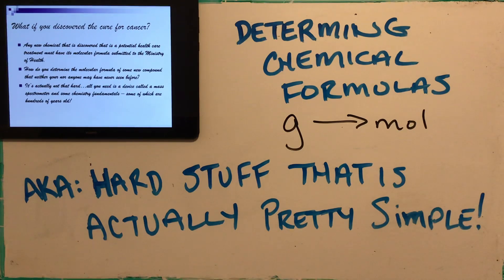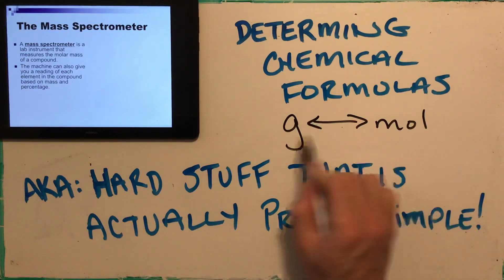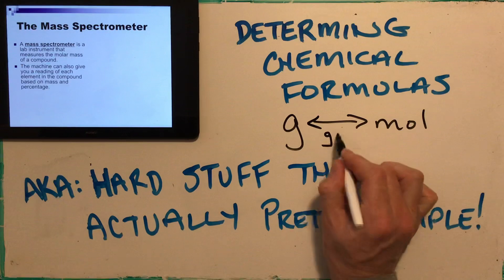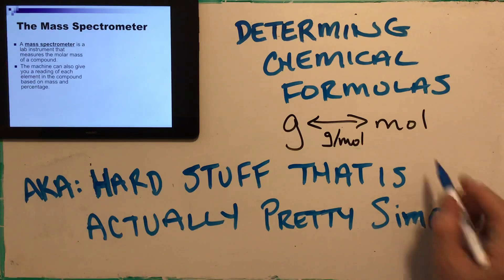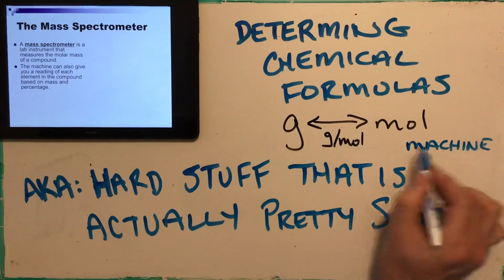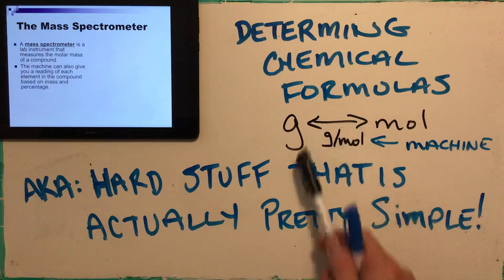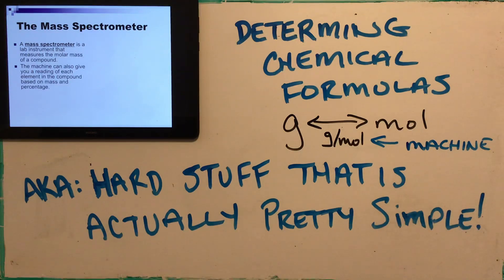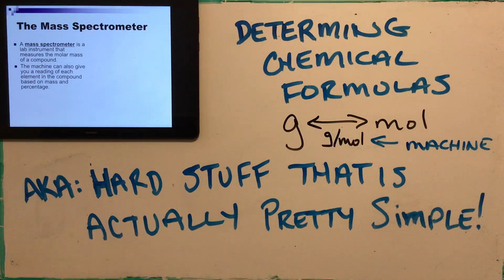A machine that helps real chemists is called the mass spectrometer. What it does is measure the molar mass of a compound. The molar mass is very important — it's grams per mole of a substance. The mass spectrometer does that for you. If you put a sample of your cancer-fighting drug into it, it will give you the molar mass — the grams per mole — for every molecule of that compound.